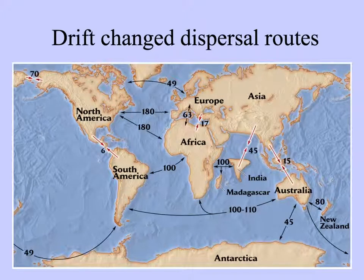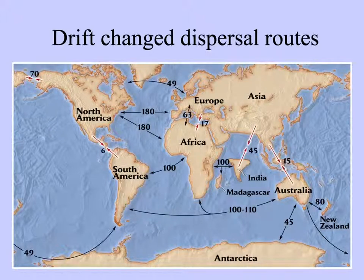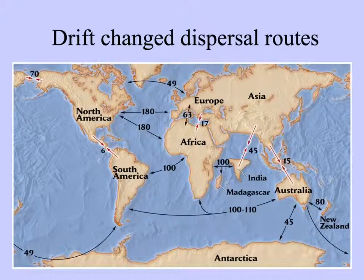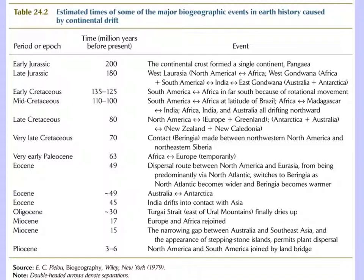As continents drifted further apart, dispersal routes were changed. When they're adjacent, it's easy for animals and plants to move, but as they move farther apart, not so easy. This table from our book shows some of the major biogeographic events in the history of the earth that were caused by continental drift.